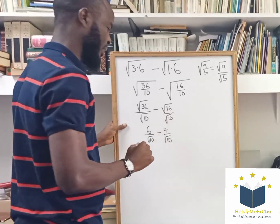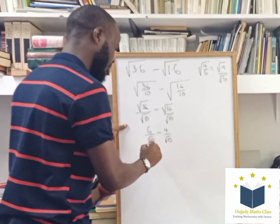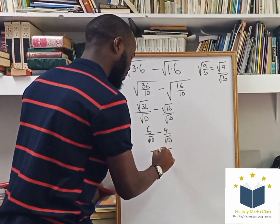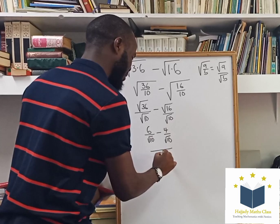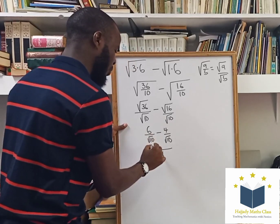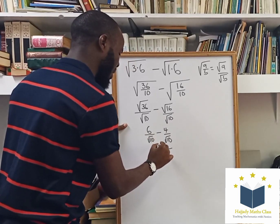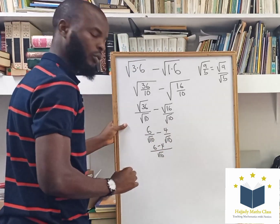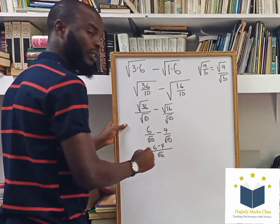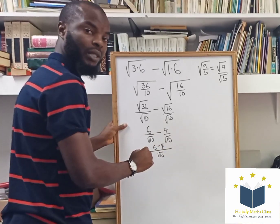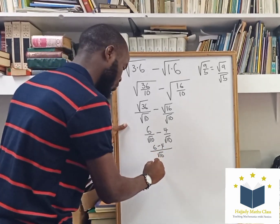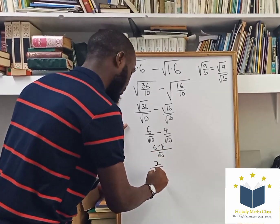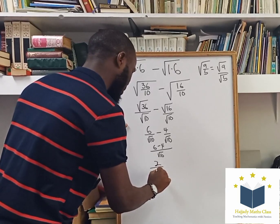Now, finding the LCM, we have root 10 as the LCM, and here we have 6 minus 4. So, 6 minus 4 is 2, giving us 2 over root 10.